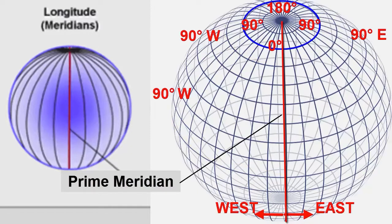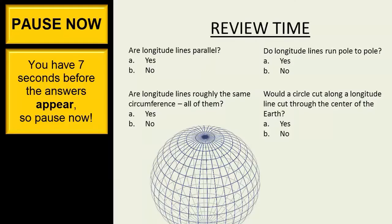Do they run from pole to pole? Are they roughly the same circumference, all of them? Would a circle cut along a longitude line cut through the center of the earth? Pause now.